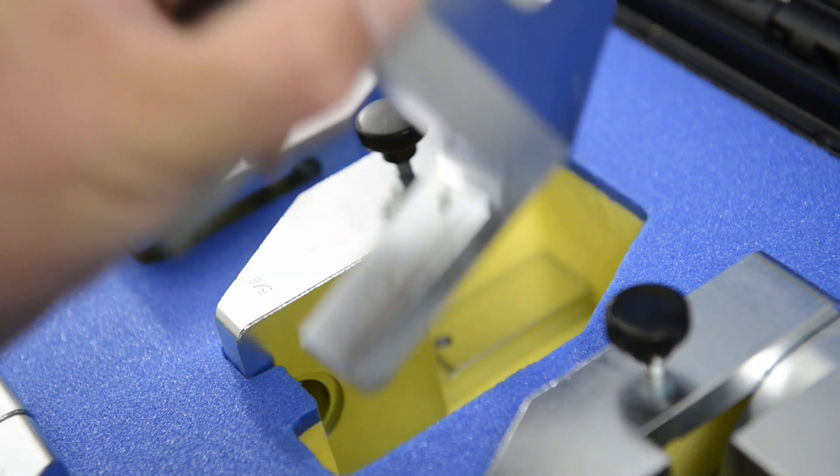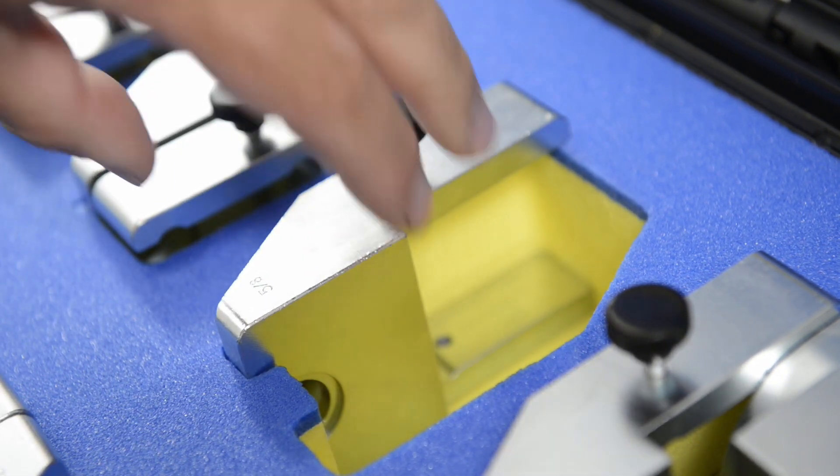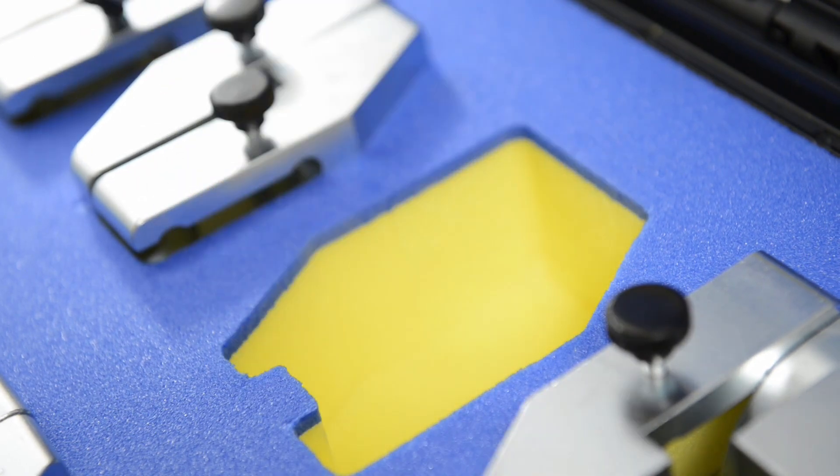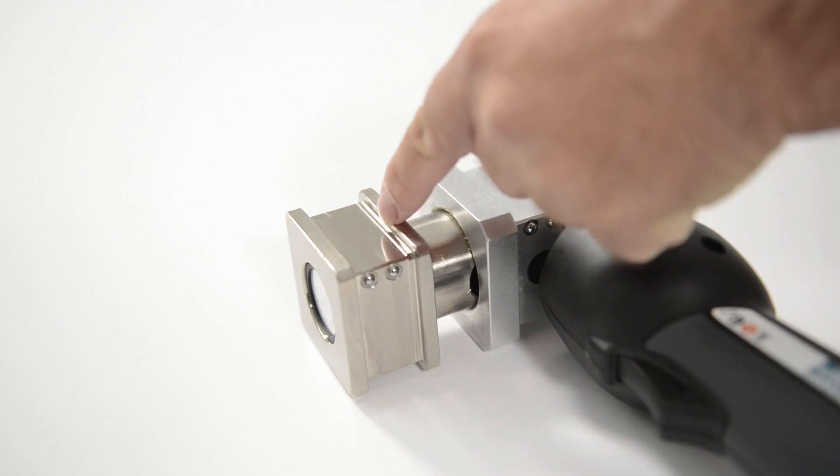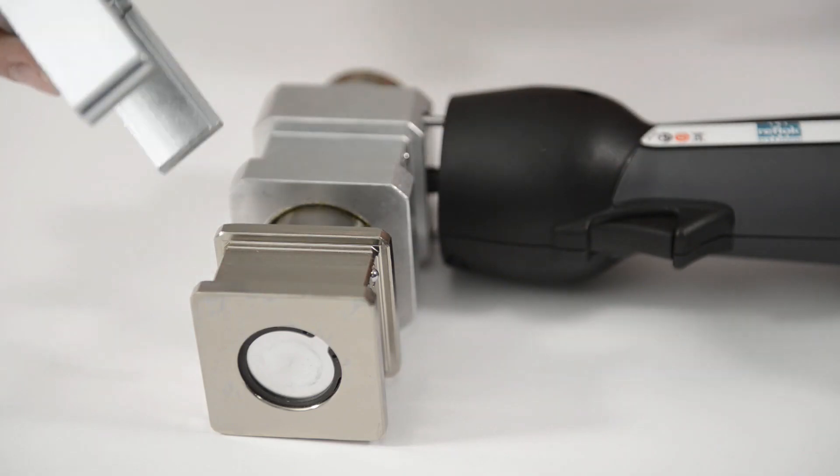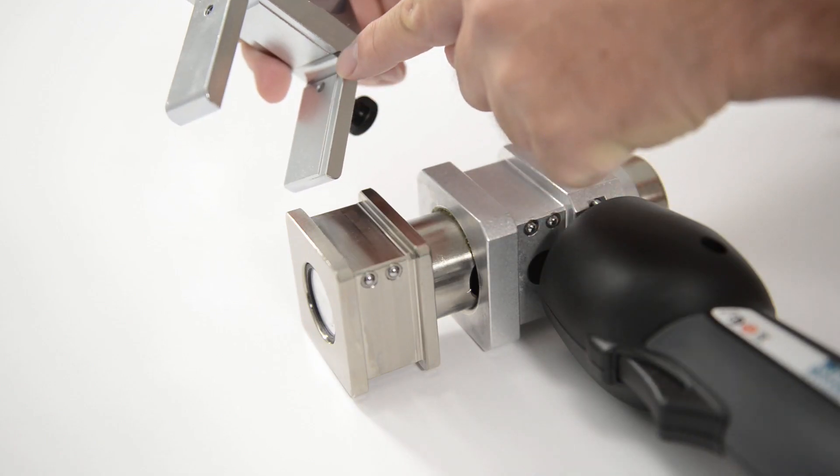Each jaw has a groove built into the tongues which ensures that you cannot place the jaw onto the tool incorrectly. The tongues of each jaw will click into place when they're fully located onto the tool head.